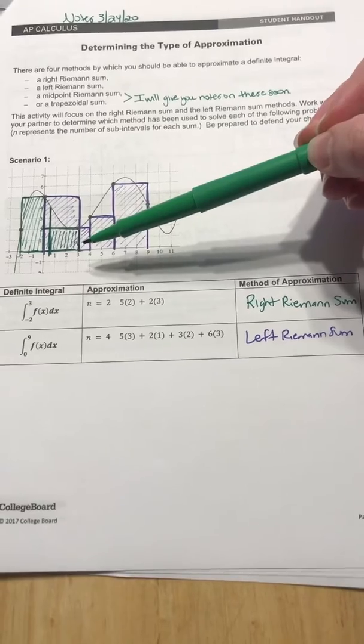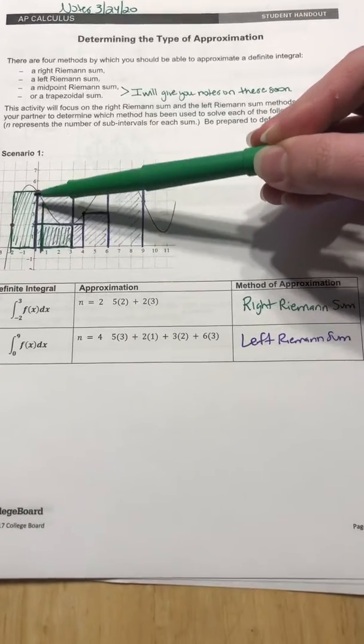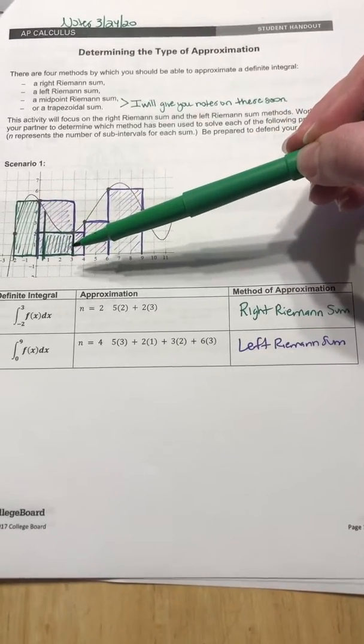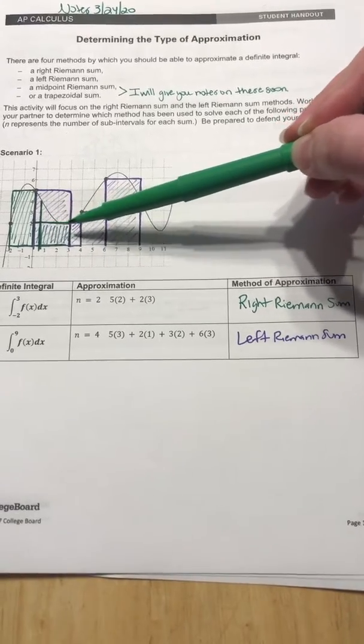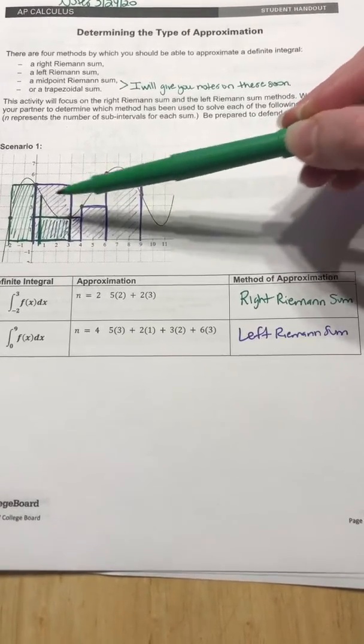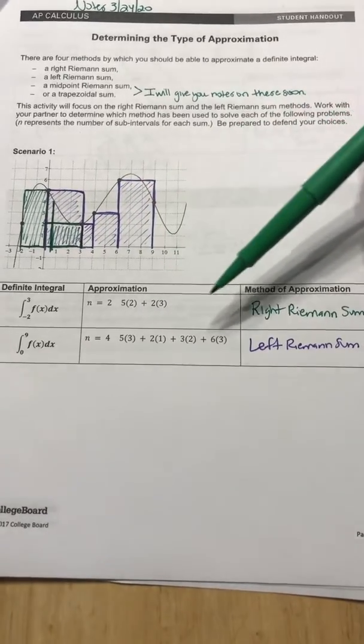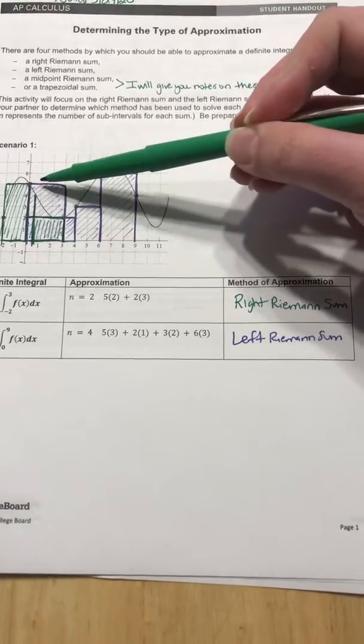So the five times two means that this first rectangle had a height of five and it's two wide, and then the two times three is that this rectangle has a height of two and is three wide. So length times width. So once you figure out that's the intervals they want, they want you to figure out that this would be a right Riemann sum because we're using the right end point.